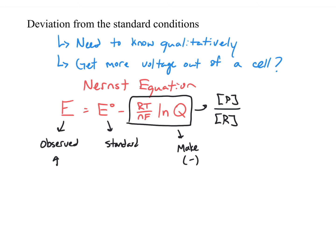To make Q a fraction, you need a larger number on the bottom than the top — more reactants than products. In a standard cell, both products and reactants are one molar, so Q equals one, and the natural log of one is zero, meaning the observed potential equals the standard potential. But if you reduce the products and increase the reactants at the start, the fraction is less than one, the log is negative, you subtract a negative, and you get an observed voltage higher than the standard. This is how you make batteries produce more voltage and run longer.